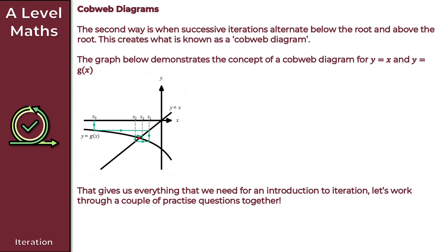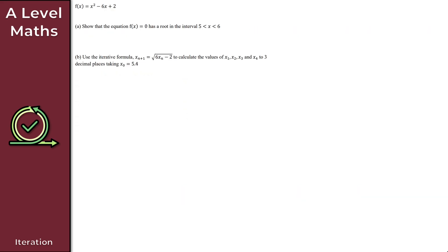That gives us everything we need for an introduction to iteration. Let's now work through a couple of practice questions together. For question one, we're given the function f of x, which is equal to x squared minus 6x plus 2. For the first part, part a, we want to show that the equation f of x equals zero has a root in the given interval.